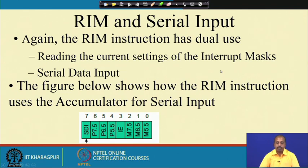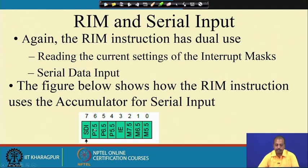Similarly, for the serial input part, we can use the RIM instruction. The RIM accumulator configuration is similar — the rest of the bits we discussed when talking about interrupts — and bit number 7 is the SDI, serial data input. When you use the RIM instruction, bits 0 to 6 are set according to the interrupt mask settings, but the SDI bit comes from the SID pin of the 8085 processor and will hold the value of the SID pin.